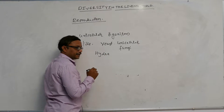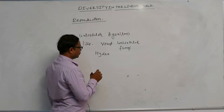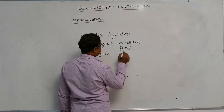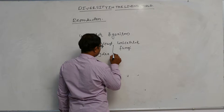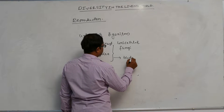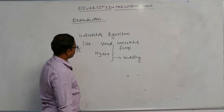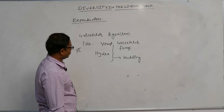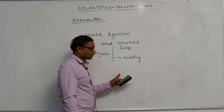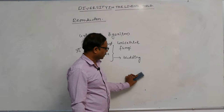Unicellular fungi is the yeast, and Hydra — which belongs to the phylum Cnidaria or Porifera. Both Hydra and yeast are showing the budding process. Unicellular organism like yeast, unicellular fungi, and Hydra show asexual reproduction that takes place by the budding process.